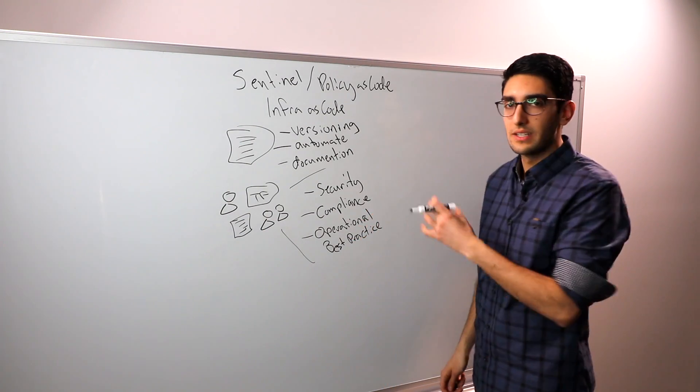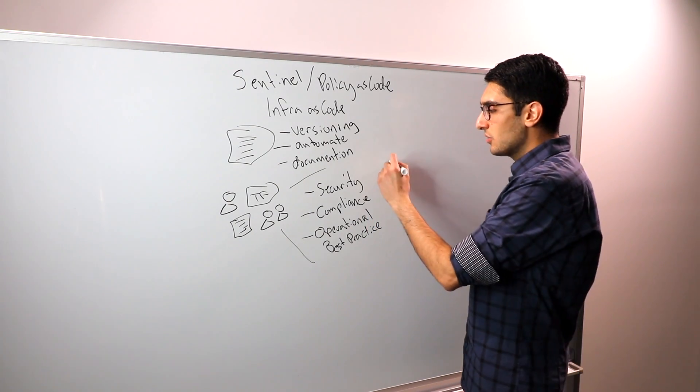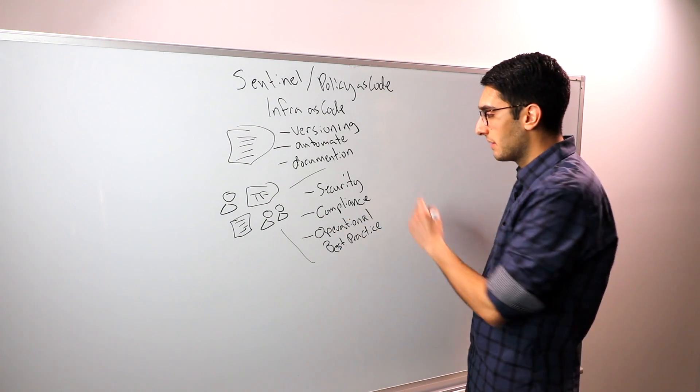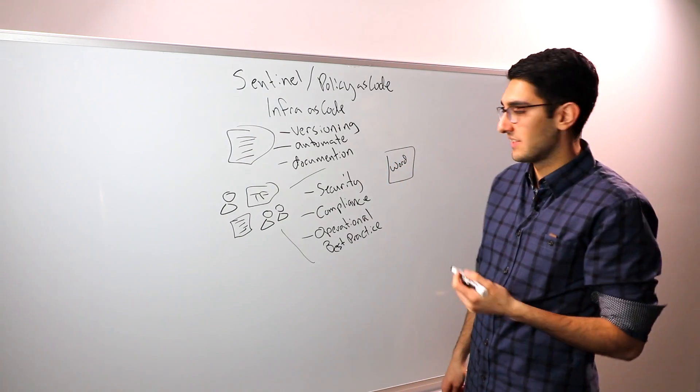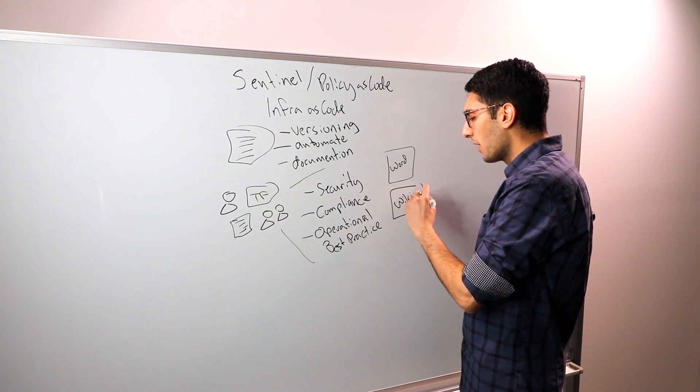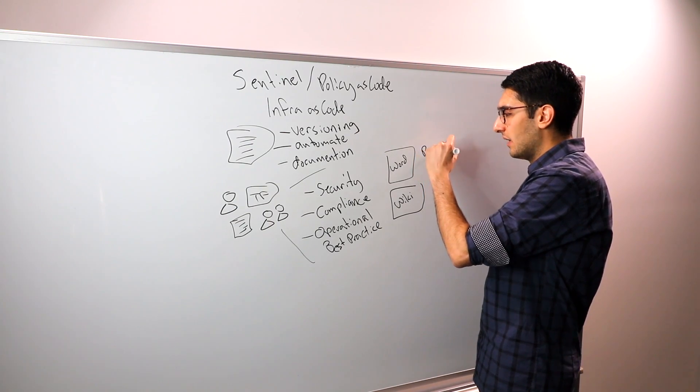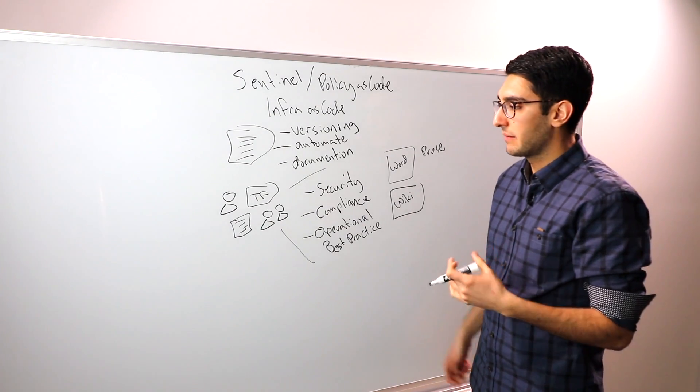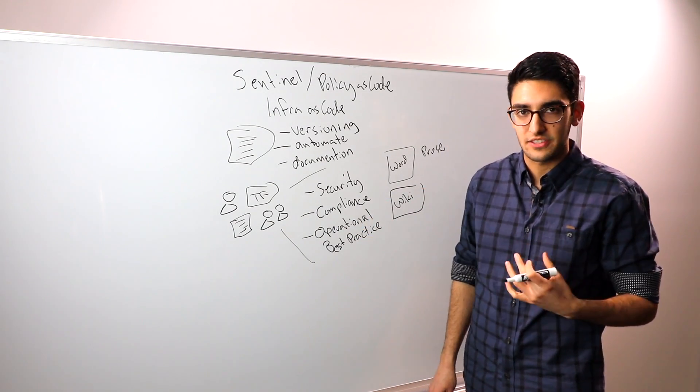Now, when we look at how these are traditionally implemented in most organizations, you usually have different groups of people, whether it's security or compliance or your operations team, that codify these things as a Word document. This might live as a Word doc, it might be a document that sits inside of a wiki. But ultimately, what we're doing is defining this in English-language prose. We're saying, here's our security policy that you should abide by any time you're provisioning something in the cloud, or here's a checklist of our operational best practices.